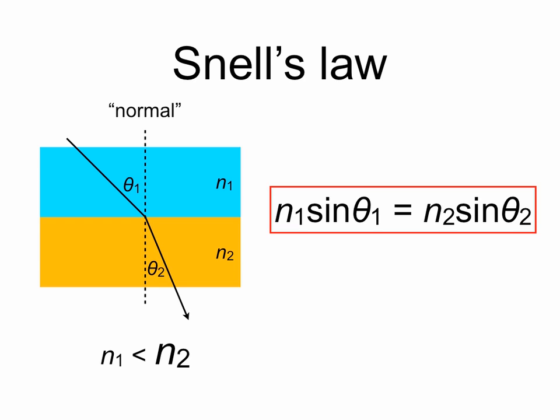In our specific example that we've drawn, N2 must be larger than N1, since θ2 is smaller than theta1, which means that sine theta2 is smaller than sine theta1. N2 must be larger than N1 for Snell's Law to be satisfied.